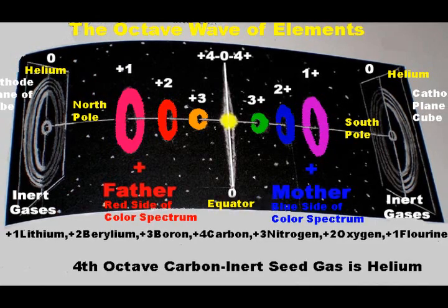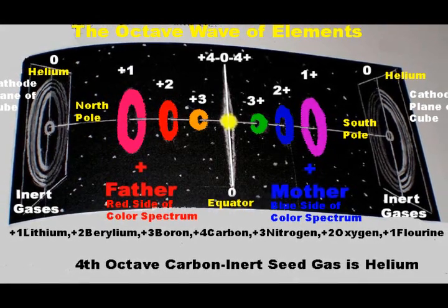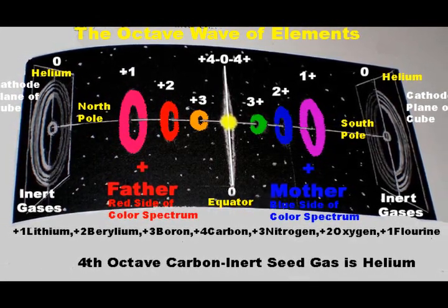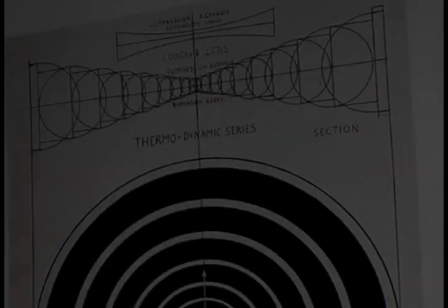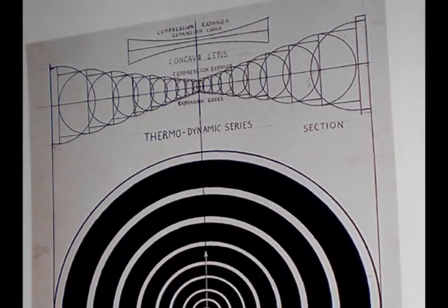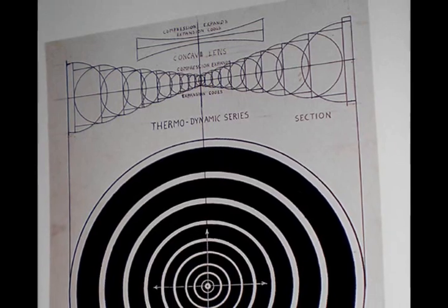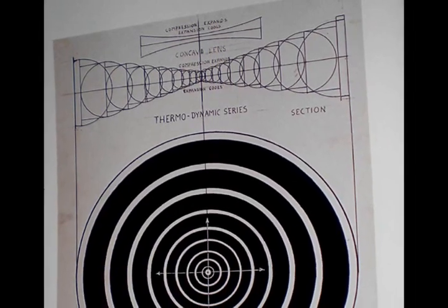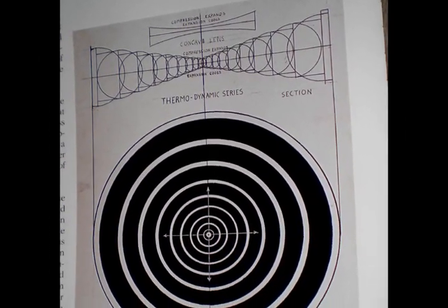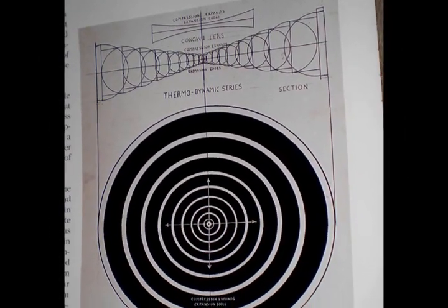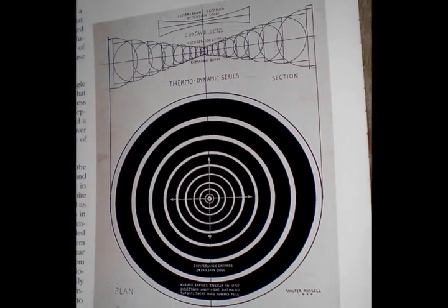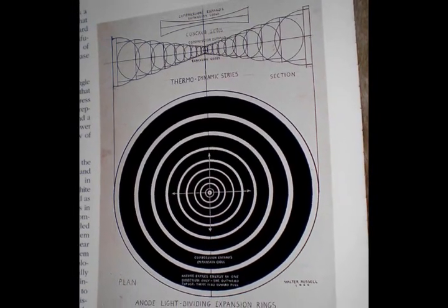The carbon octave of elements is shown here. Biconcave electric light lenses expand spiraling electric light waves, thereby lowering their potential and returning them to the immense cold of space and the omnipresent cathode planes of still magnetic light.